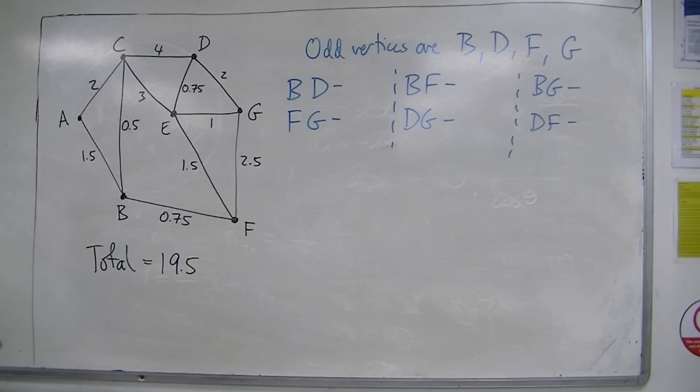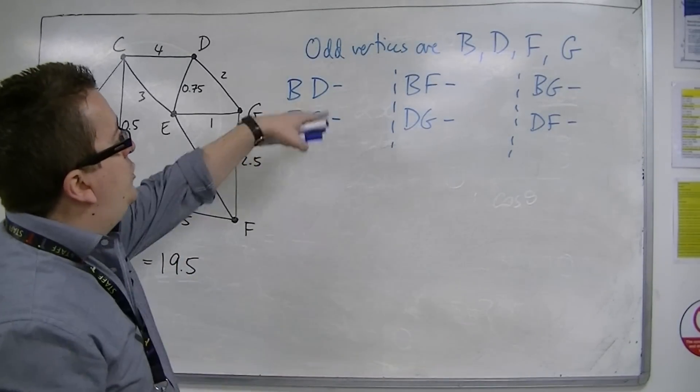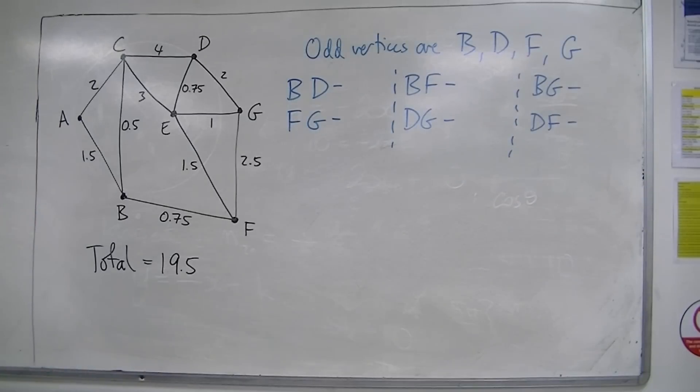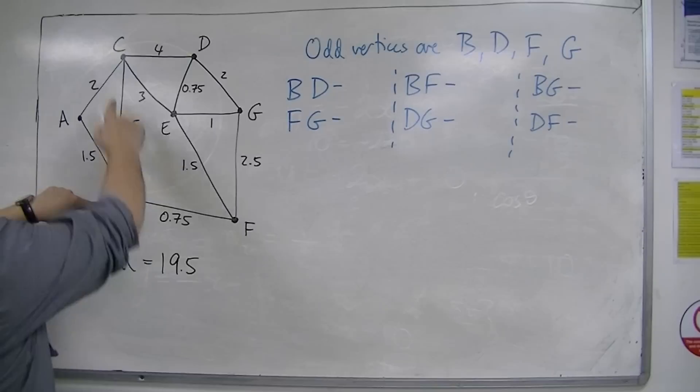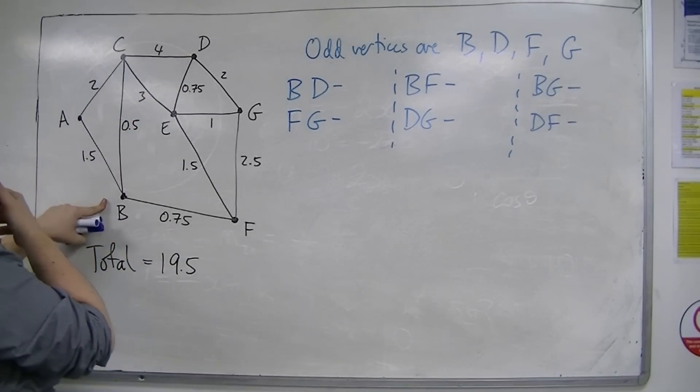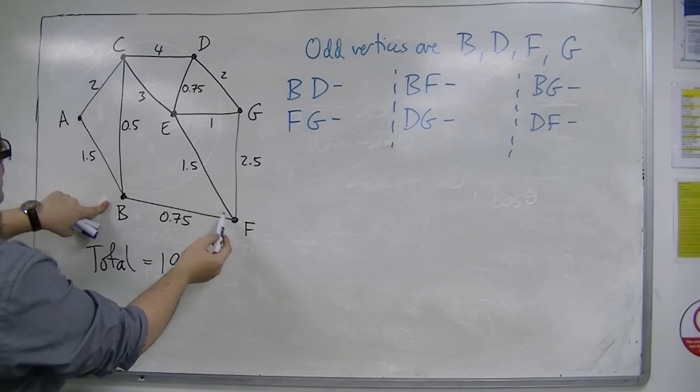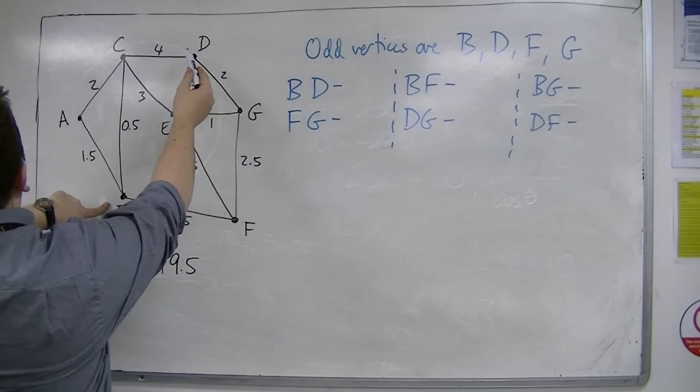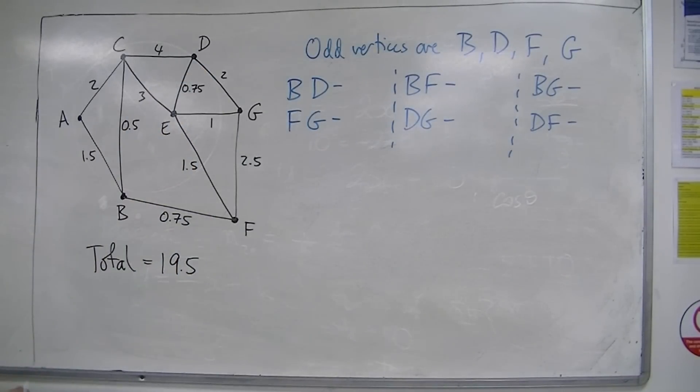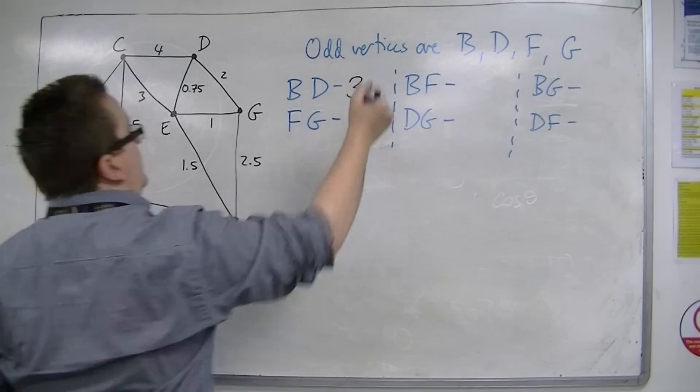Now we need to find the shortest distance between each of these pairs. So we're going to start off with B, D. So from B to D, we've got 0.5 and 4, so it'll be 4.5. Is there a shorter way? 0.75, 1.5, 0.75. That would add up to 3. OK, so that's shortest, so that's 3.